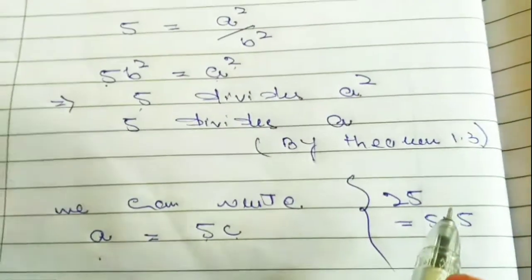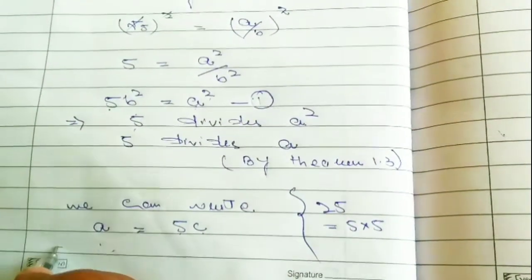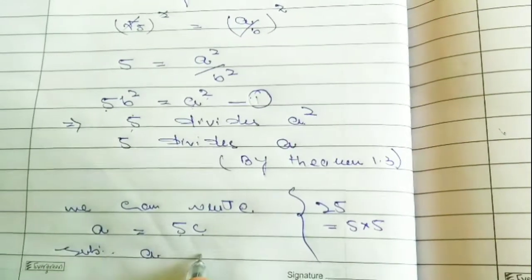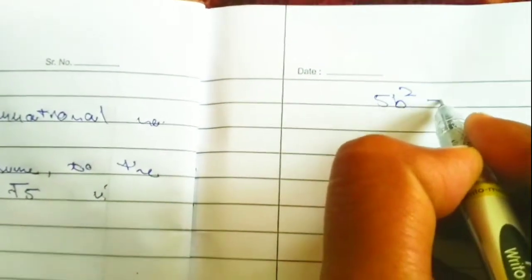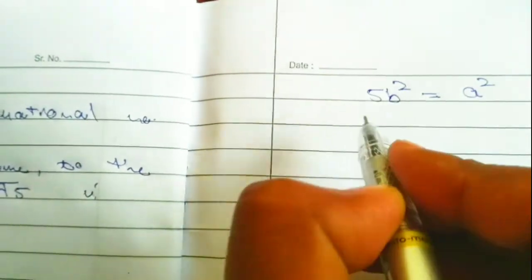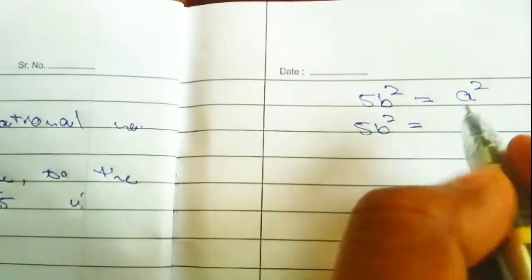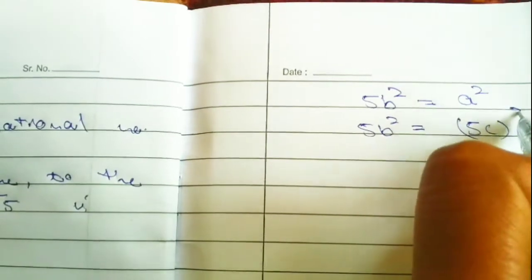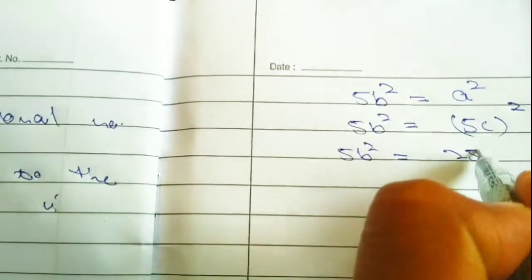So here we will substitute A in equation first. Our first equation is 5B square equal to A square. 5B square equal to A value, that is 5C whole square.